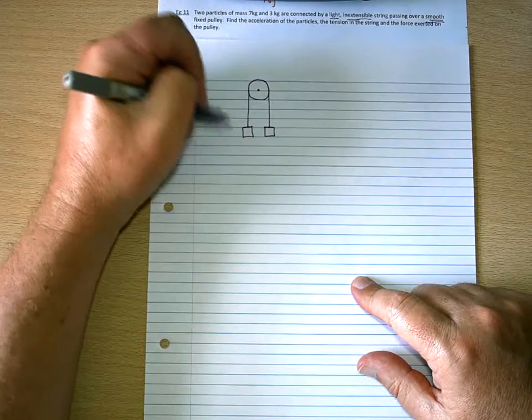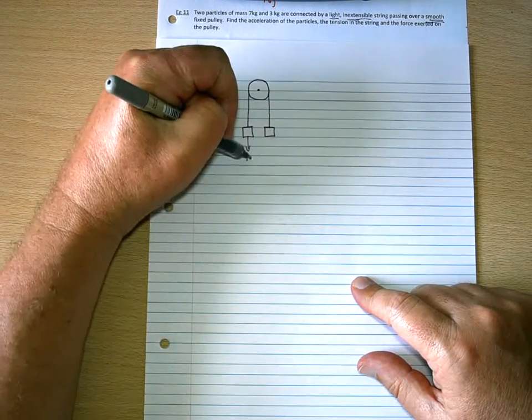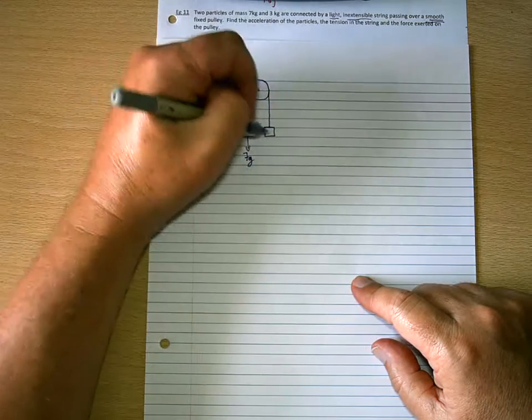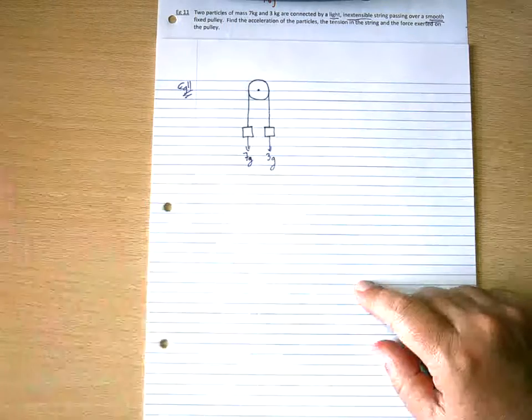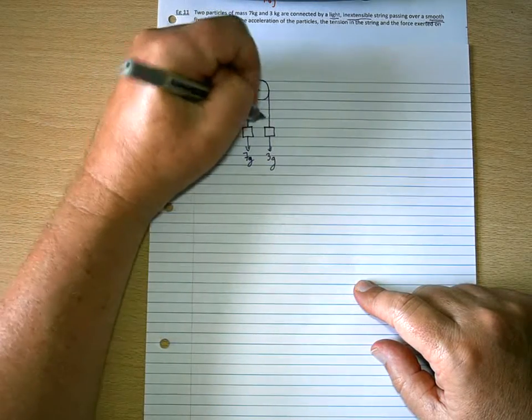Okay, so we've got a particle with mass 7kg, so this is a force diagram, so that's going to be 7g. And the other one will be of weight 3g. And then fighting against those will be a tension.